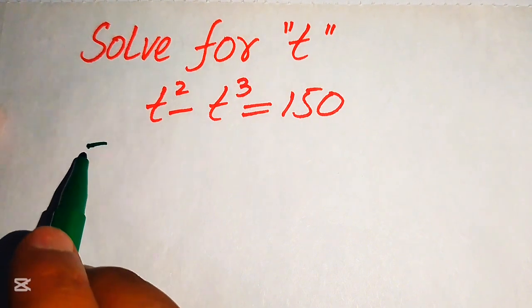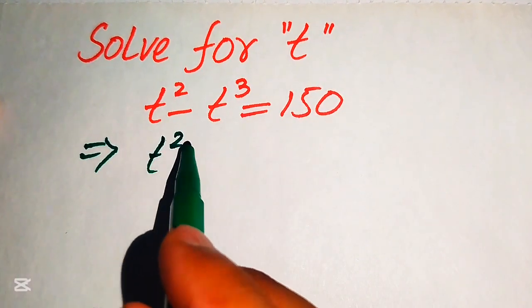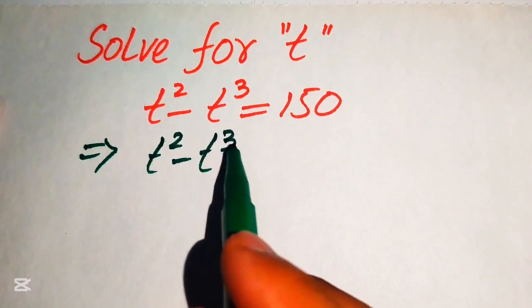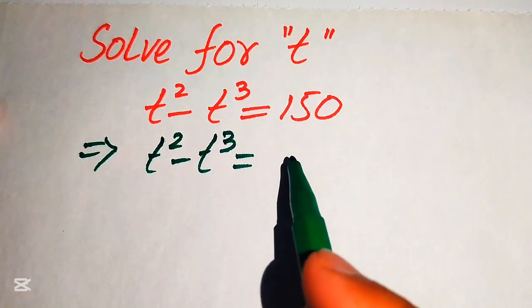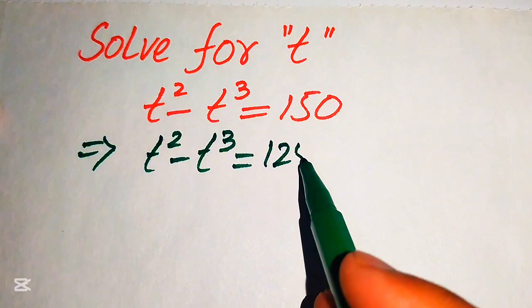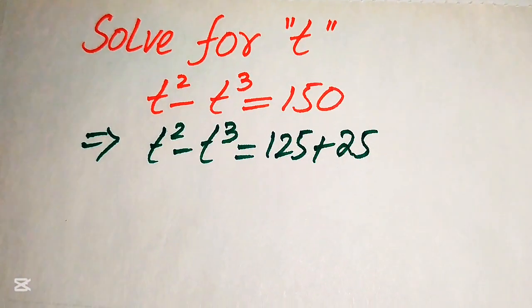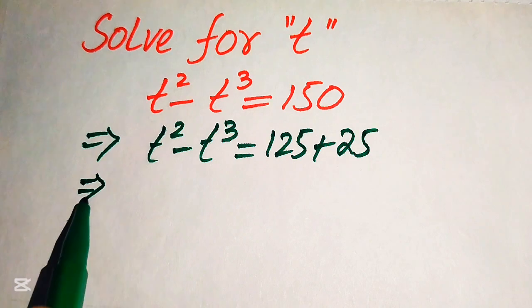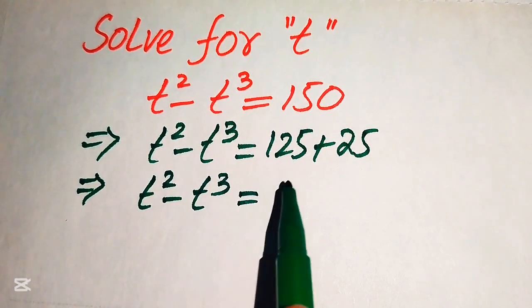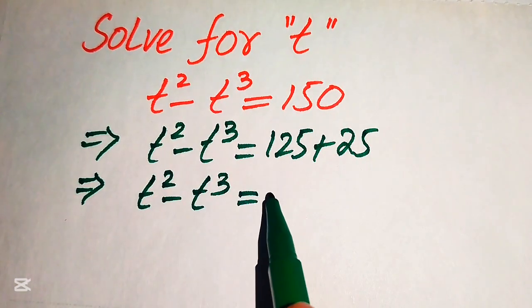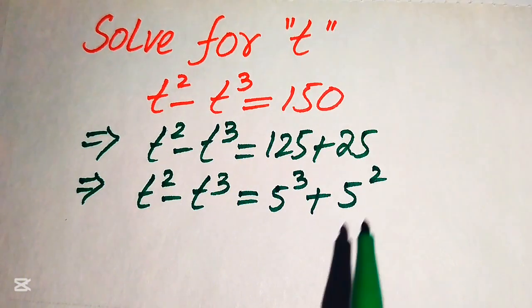First we focus on the right-hand side. We have t squared minus t cubed equals 150, and we break 150 as 125 plus 25, then rewrite the right-hand side as 5 cubed plus 5 squared.